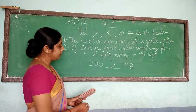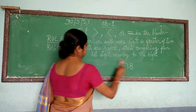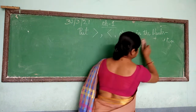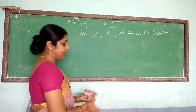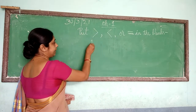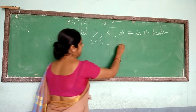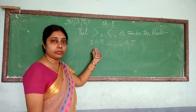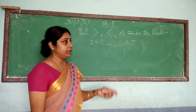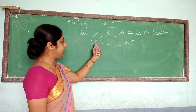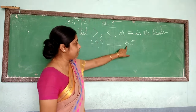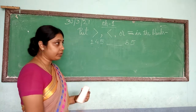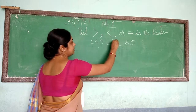Let us go to another example: 145 and 85. The first rule — we compare the number of digits. On the left side we can see a 3-digit number, and here we can see a 2-digit number. So easily we can identify that this side — 145 — is greater. So we are going to put the greater than sign here.